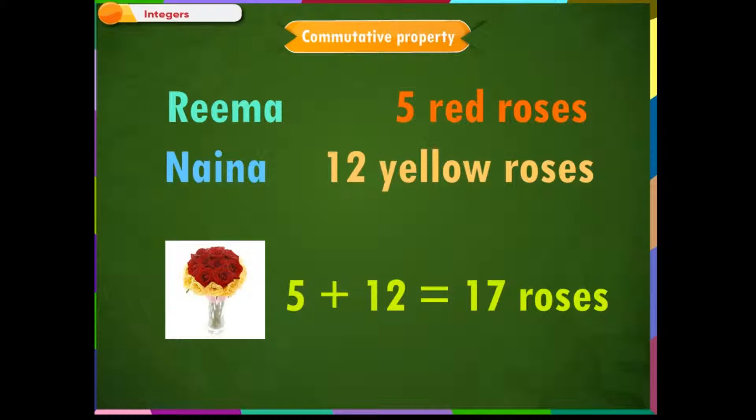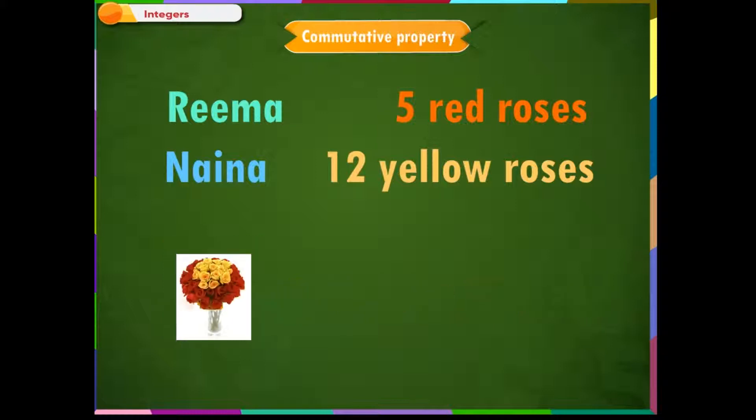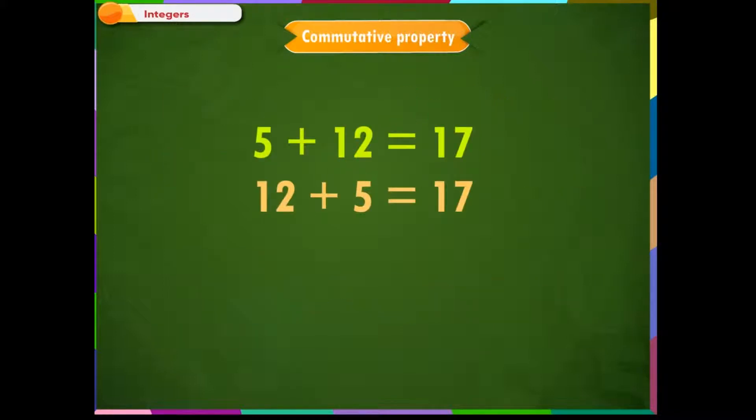If suppose Naina would have put her flowers first in the vase, then also the total number of roses in the flower vase is 12 plus 5 equal to 17. So, we see that even after interchanging the position of the addends, we get the same sum. This property is named as Commutative Property.